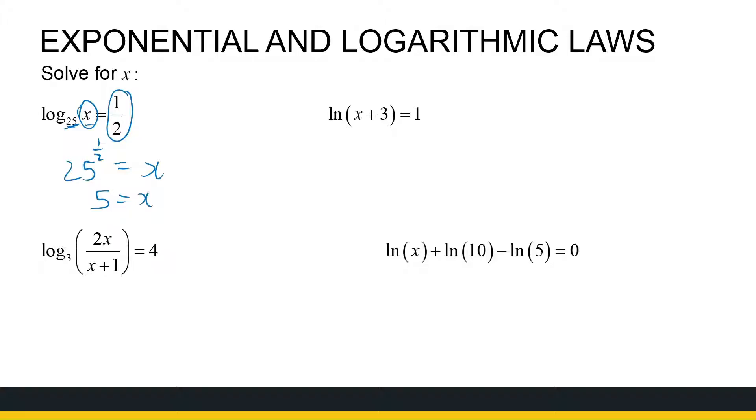If I move across, ln of x plus 3 is equal to 1. Well, ln is a log base e, so if I rewrite that in exponential form, that means e to the power 1 is equal to x plus 3, which means x is e minus 3. Now, as a rule of thumb, leave it like that. Don't type e minus 3 on your calculator and give an ugly decimal number. It's sufficient as it stands there.